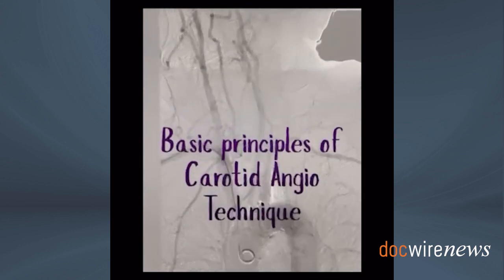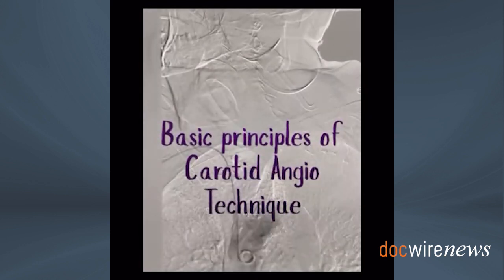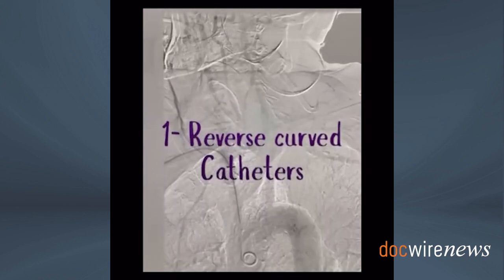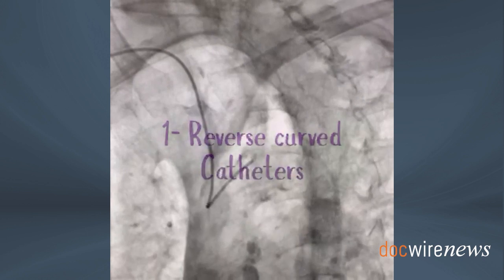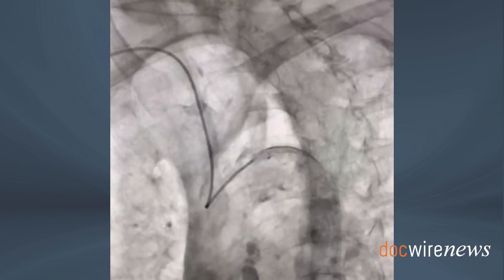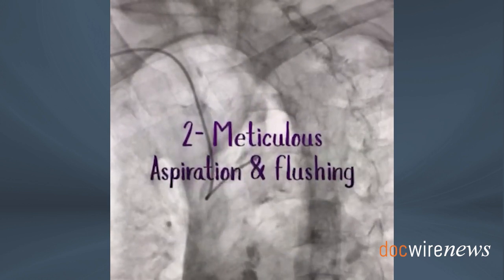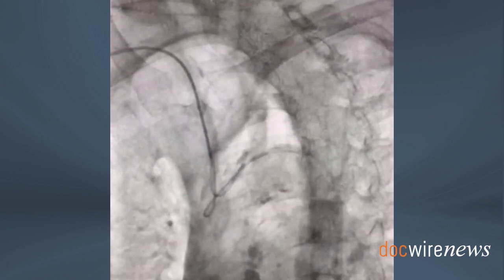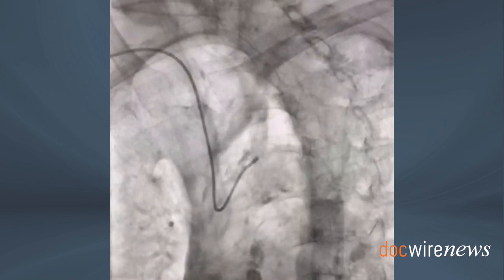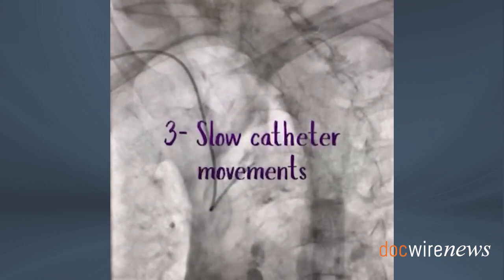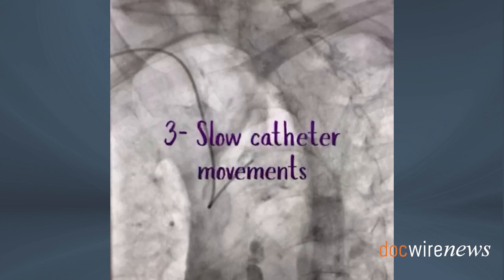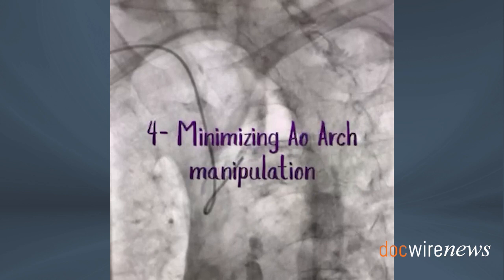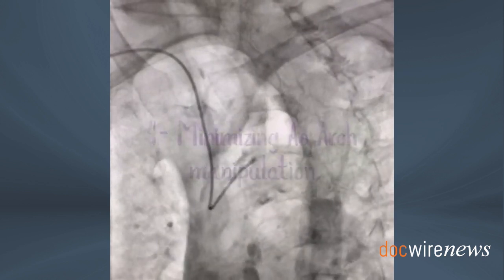There are some basic principles for carotid angiography technique that are very important to minimize complications. Number one, using reverse curved catheters comes in very handy from radial axis. Secondly, it's extremely important to watch for air bubbles during the aspiration and flushing process, even more than coronary technique. Thirdly, catheter movements have to be slow to minimize plaque disruption. And finally, we try to minimize our time in the aortic arch as much as possible.